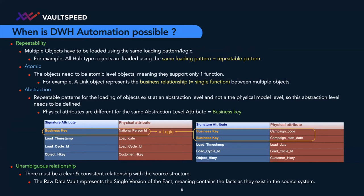Taking the example of Data Vault: all hub object types are loaded with the same loading logic, and the same applies to all satellites and all links. That's already a good thing — Data Vault adheres to this first rule. But to ensure repeatability works, the objects also need to be at an atomic level, meaning each should have only one function. In Data Vault, a hub contains keys, a satellite contains descriptive information, and a link represents the business relationship. If there are multiple functions in one object, it's impossible or very difficult to automate without extensive additional metadata.